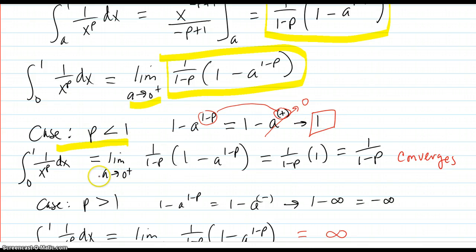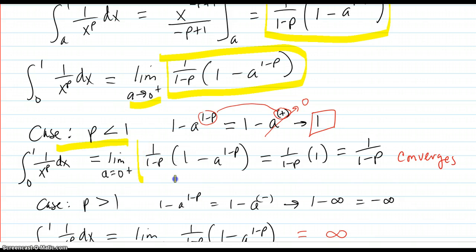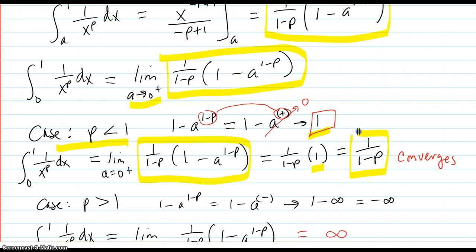In the limit as a goes to 0 from the plus side, you have 1 over 1 minus p times the 1 that the expression converges to. So you get 1 over 1 minus p, which is just some number. Since p is less than 1, it's some positive number, which matches the graph — being a positive area.